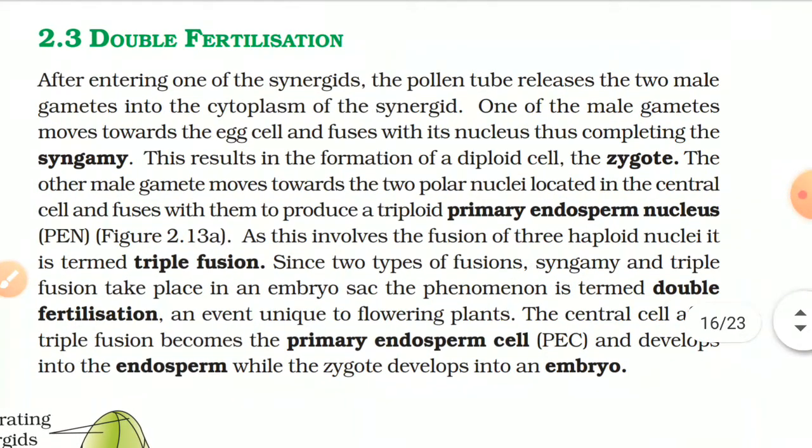Double Fertilization: After entering one of the synergids, the pollen tube releases two male gametes into the cytoplasm of the synergid. One of the male gametes moves towards the egg cell and fuses with its nucleus, thus completing syngamy. This results in the formation of a diploid cell — the zygote. The other male gamete moves towards the two polar nuclei located in the central cell and fuses with them to produce a triploid primary endosperm nucleus (PEN). As this involves the fusion of three haploid nuclei, it is termed triple fusion.